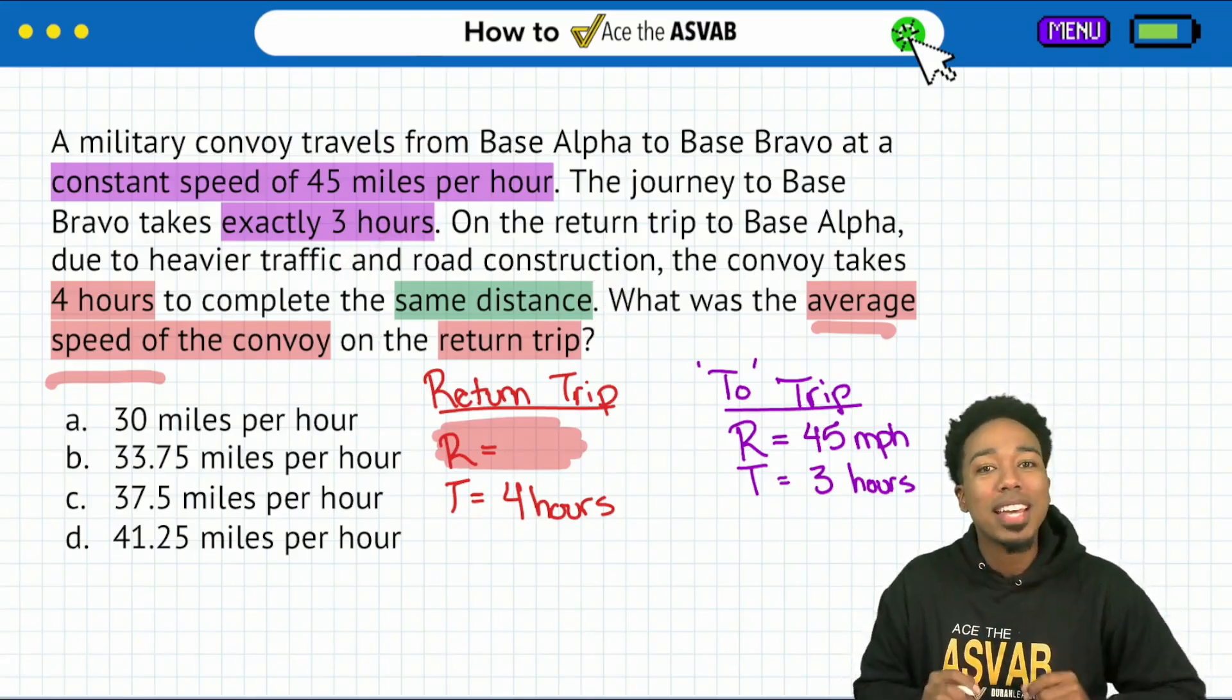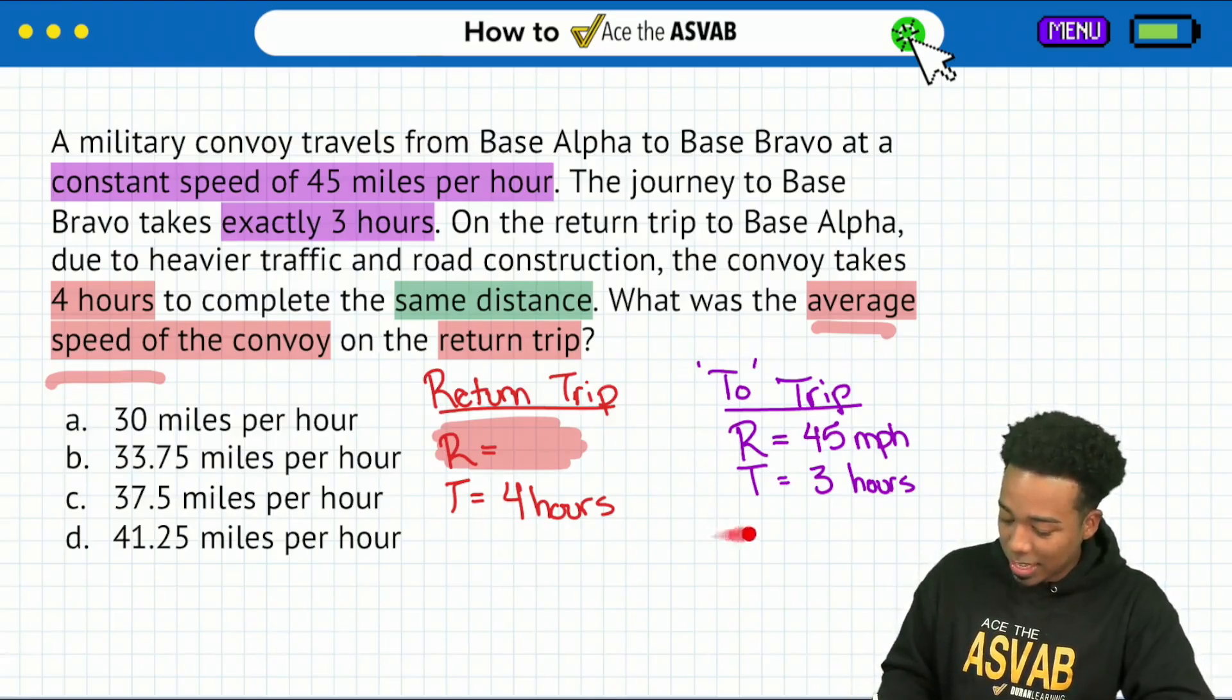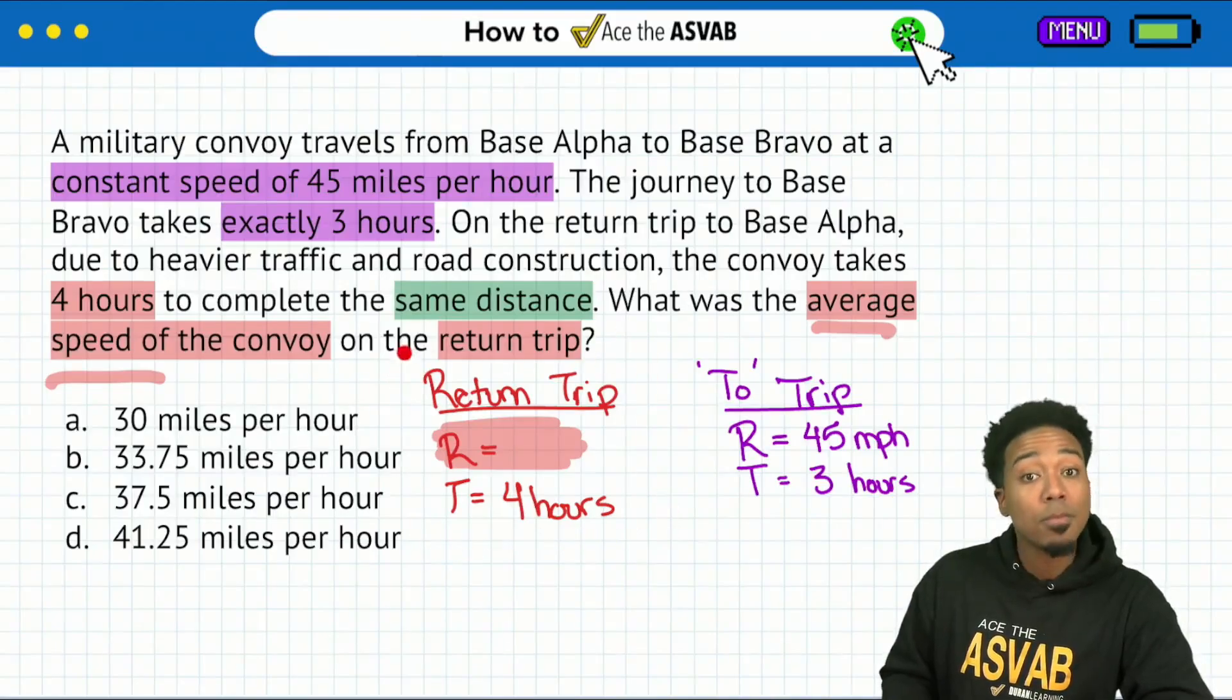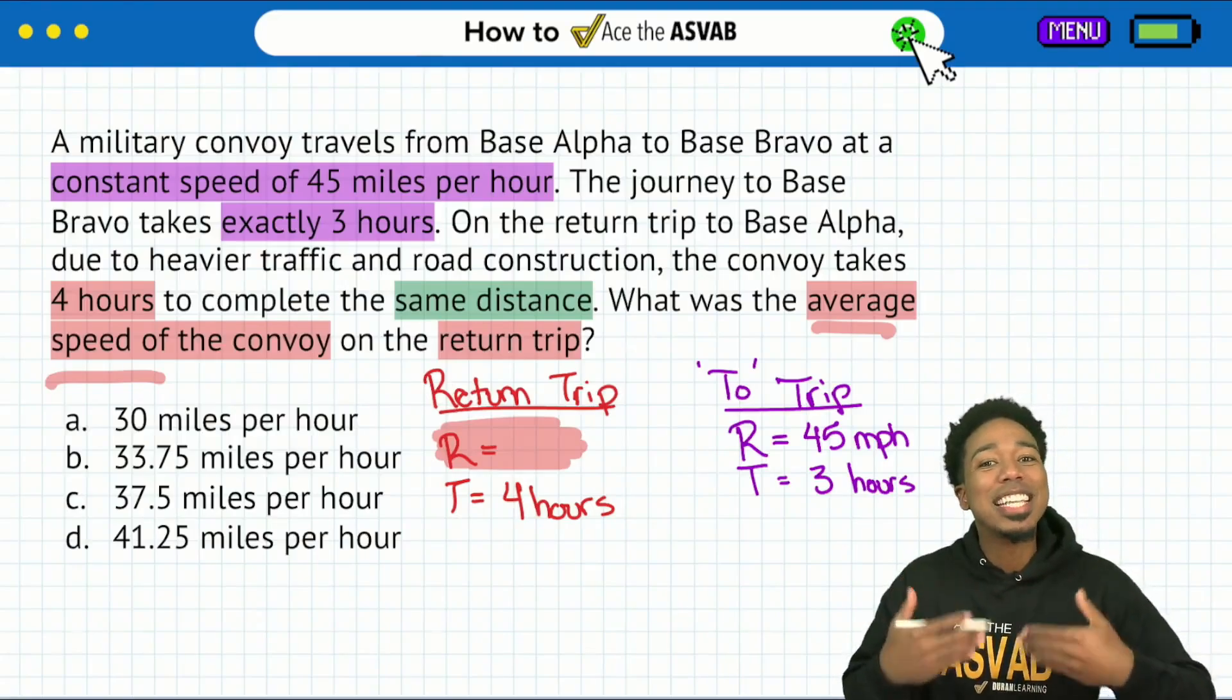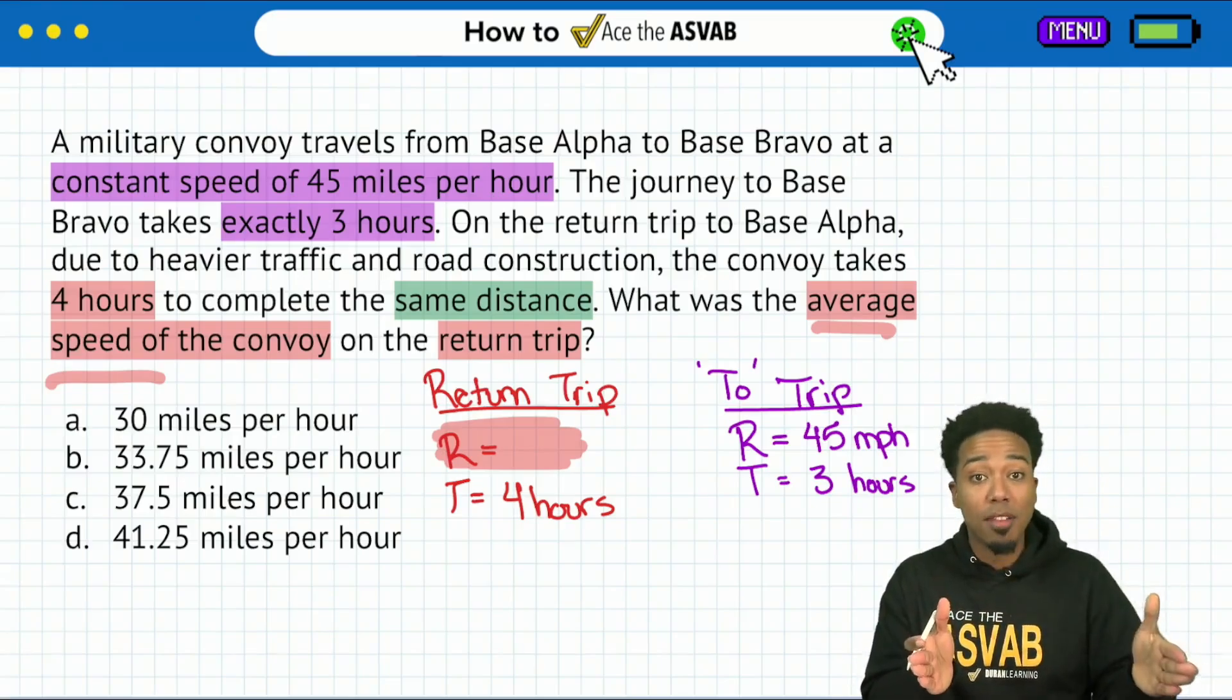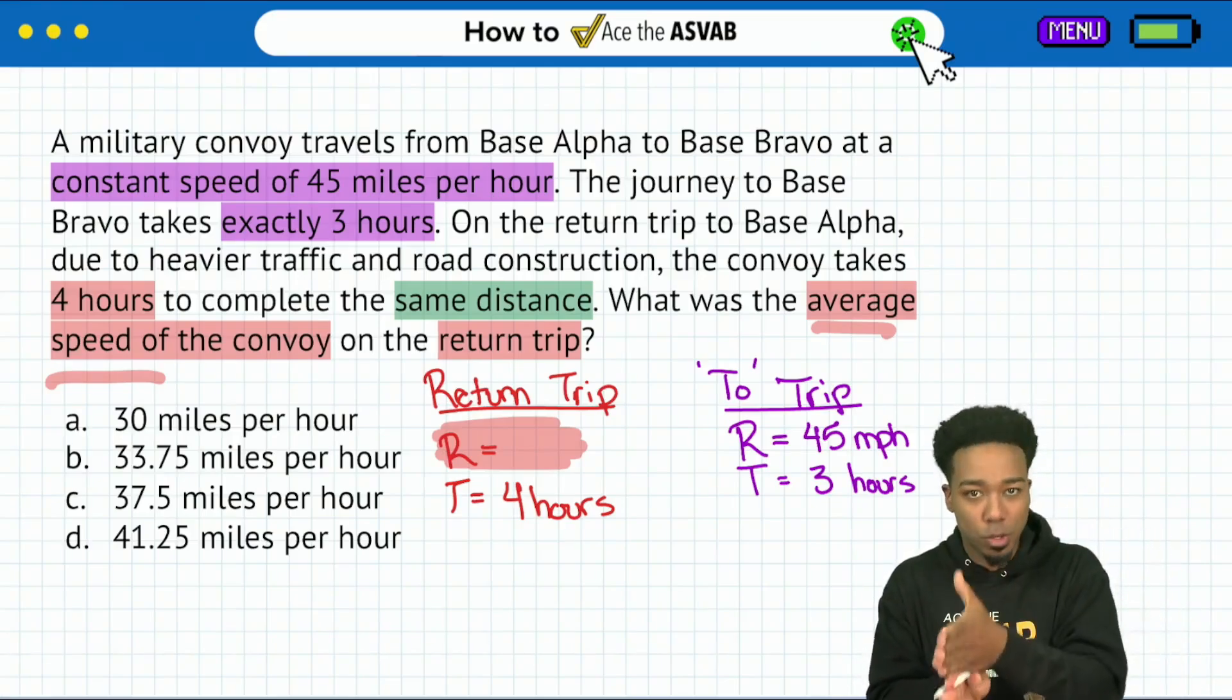You'll understand right here from this green highlight where it says the same distance. What we know about that is that if we calculate the distance here for the trip to base Bravo, that means it's going to be the same distance for the trip back to base alpha.